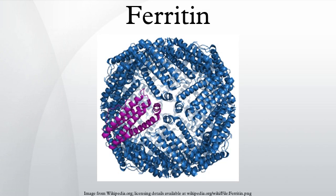Ferritin is also used in materials science as a precursor in making iron nanoparticles for carbon nanotube growth by chemical vapor deposition. In vertebrates, ferritin is usually found within cells, although it is also present in smaller quantities in the plasma.